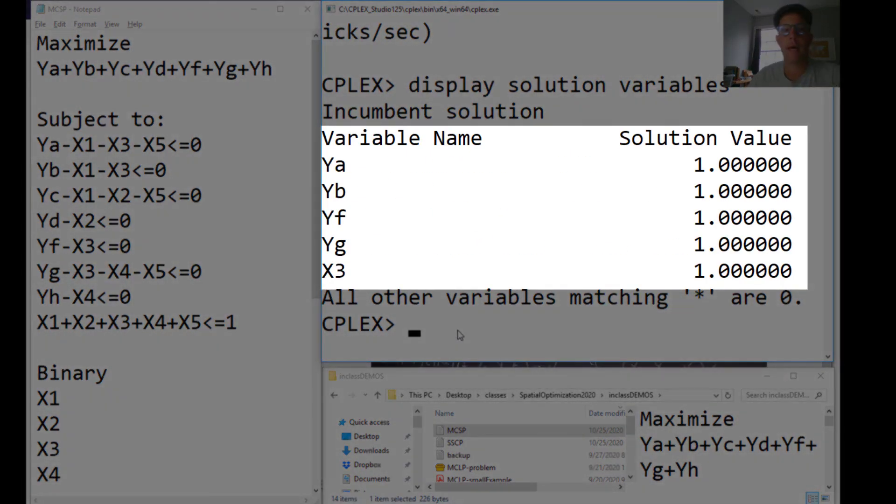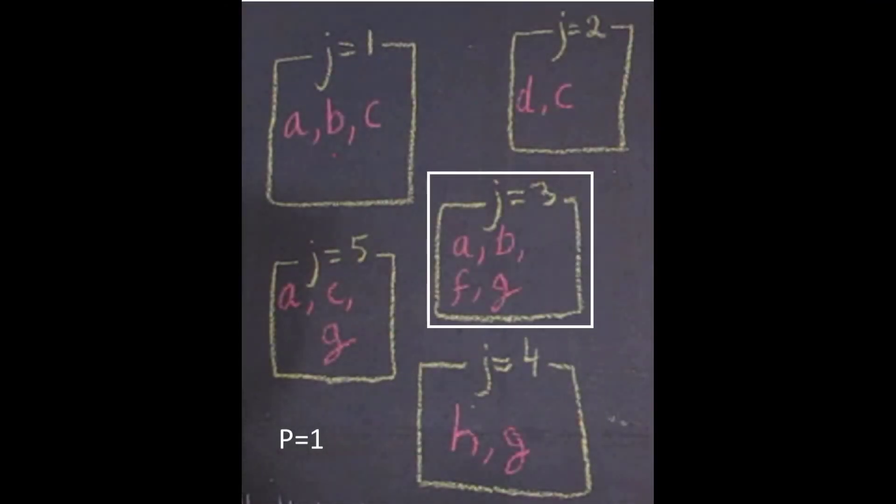Now we may want to see which species are preserved and which parcel is selected here. Display solution variables all. And it tells us that parcel number three is set aside, and then three species A, B, F, and J are being selected.